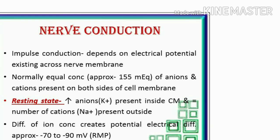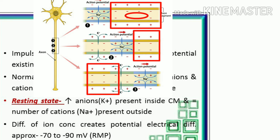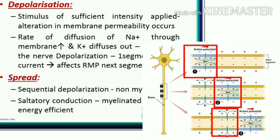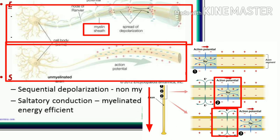Nerve conduction: impulse conduction depends on the electrical potential existing across the nerve membrane. Normally, equal concentrations of anions and cations are present on both sides of the cell membrane. In the resting state, anions and K+ are present inside the cell membrane and an equal number of cations (Na+) are present outside. This difference in ion concentration creates a potential electrical difference of approximately minus 70 to minus 90 mV — the resting membrane potential. Upon depolarization, a stimulus of sufficient intensity causes alteration in membrane permeability, sodium diffuses into the membrane, and potassium diffuses out, depolarizing the nerve. This spreads via sequential depolarization — non-myelinated fibers conduct continuously, while myelinated fibers use saltatory conduction, which is faster and energy efficient.